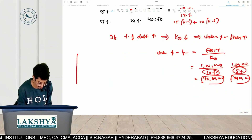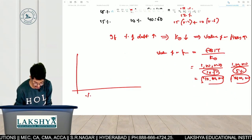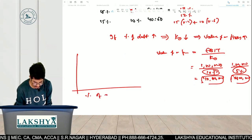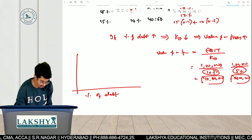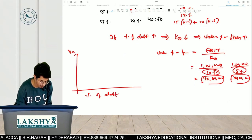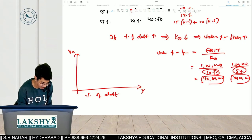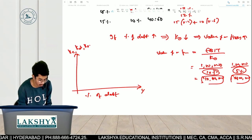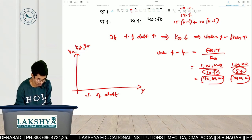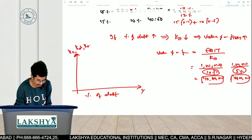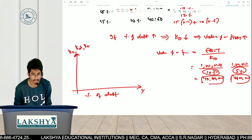We can plot a graph for this. On the X-axis we put the percentage of debt. On the Y-axis we plot three variables: K-E, K-D, and K-O.